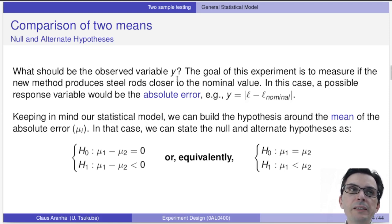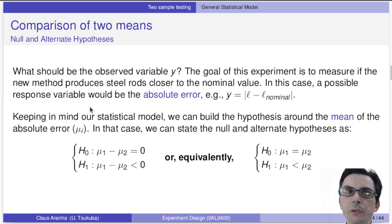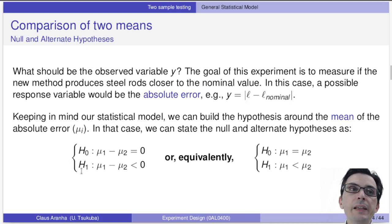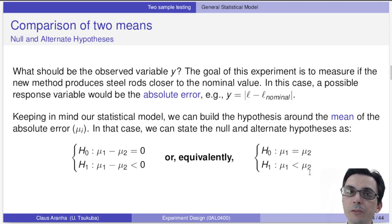So what should be the variable y? Since the goal of this experiment is to measure the cutting error of steel rods, the variable we're working with is the absolute error — that is, the length of the bar minus the target length L. Given the statistical model, we build the hypothesis around the mean of the absolute error. The null hypothesis is that the difference of the means is zero, and the alternate hypothesis is that the difference of the means is not zero. Equivalently, the null hypothesis is that the mean of method one equals the mean of method two, and the alternate hypothesis is that the mean of method one is less than the mean of method two.